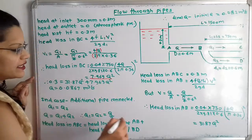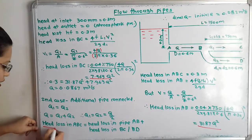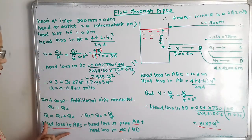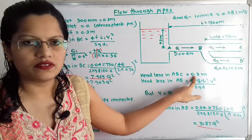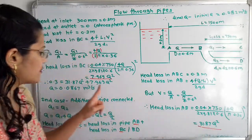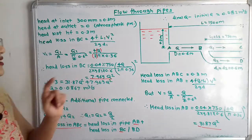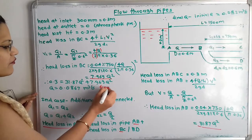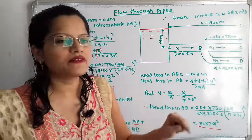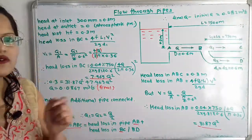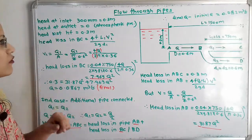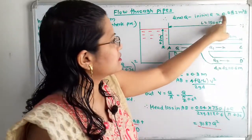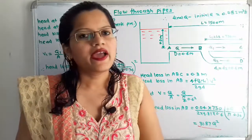Now applying the head loss equation for path ABC: hf_ABC = hf_AB + hf_BC. So 0.3 = 31.87 Q² + 7.969 Q². Solving for Q gives Q = 0.0867 m³/s. This is the discharge after connecting the parallel pipe. The increase in discharge = final Q - initial Q = 0.0867 - 0.0685 = 0.0182 m³/s. This is the final answer.